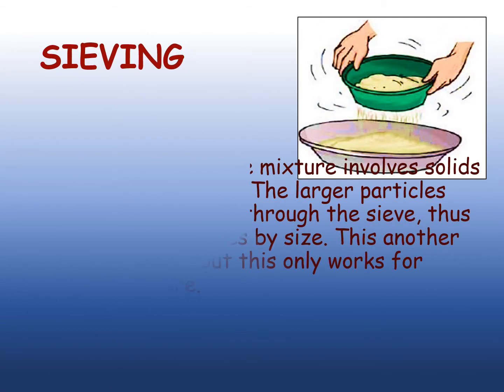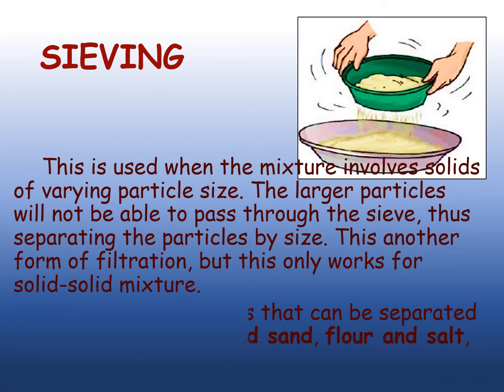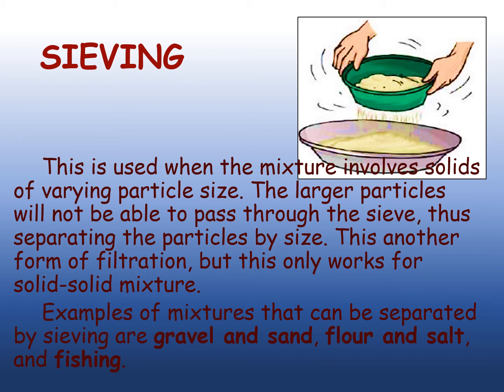Sieving is another technique in separating mixtures. In this technique, we separate mixtures that involve solids of varying particle size. The larger particles will not be able to pass through the sieve, thus separating the particles by size. This is another form of filtration, but this only works for solid-solid mixtures. Examples of mixtures that can be separated by sieving are gravel and sand, flour and salt, and fishing.